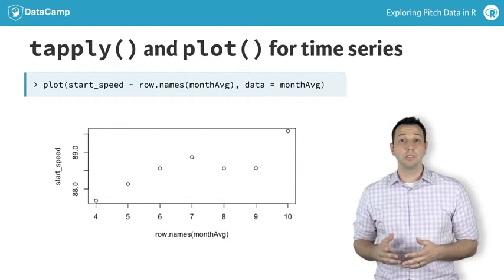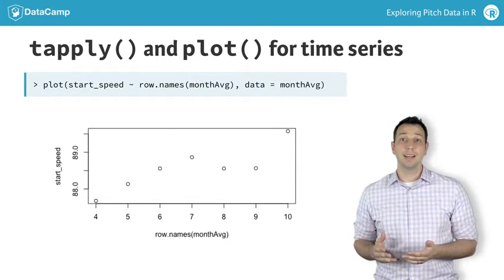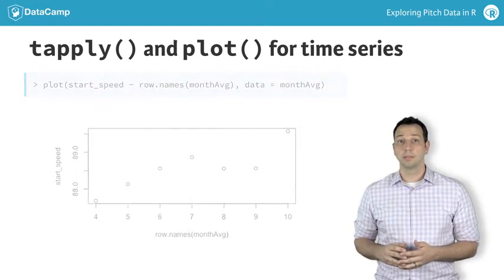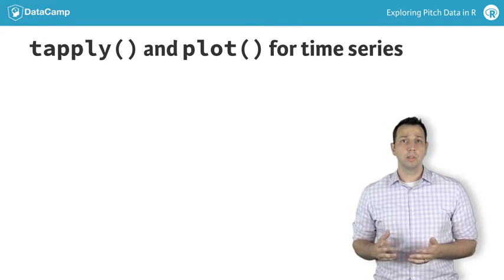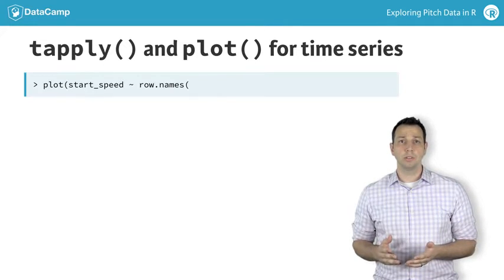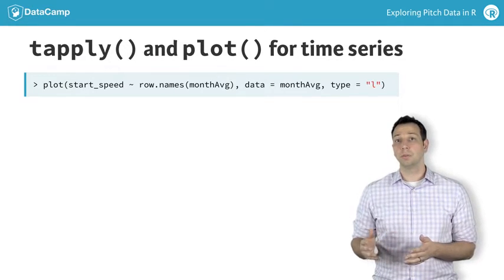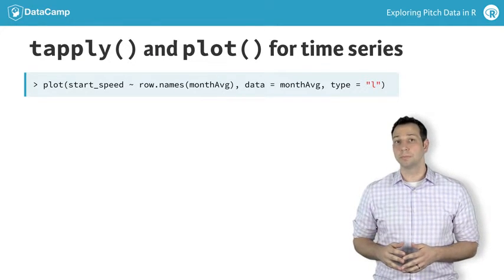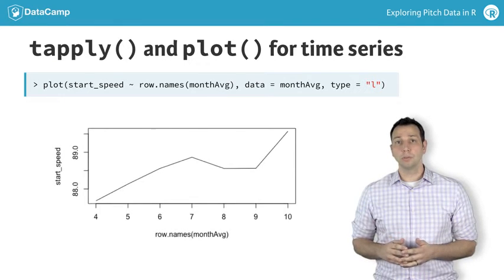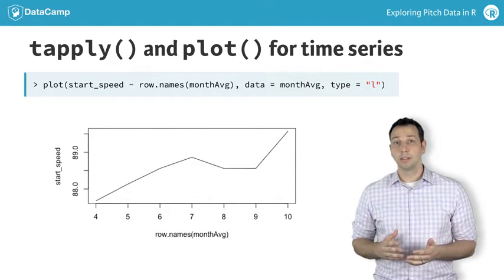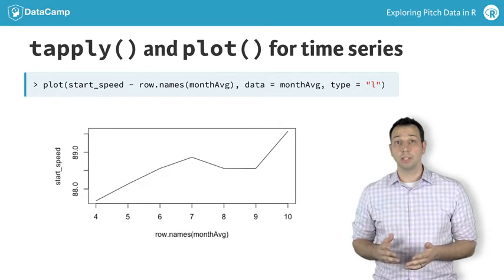However, time series plots are usually created as line plots. This is coded simply with the plot function using the type equals L option. While line plots are useful for recognizing trends in the mean, it's sometimes helpful to visualize the variability for each game as well.